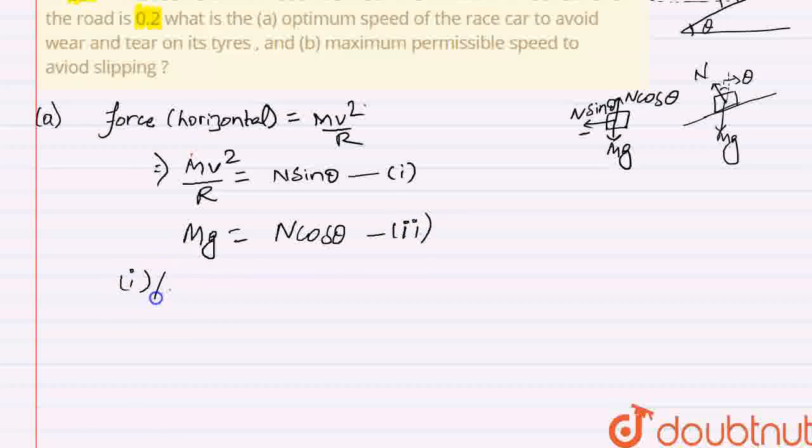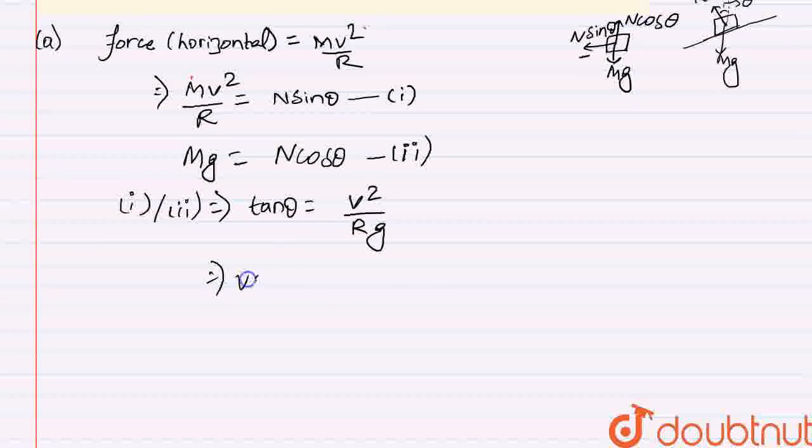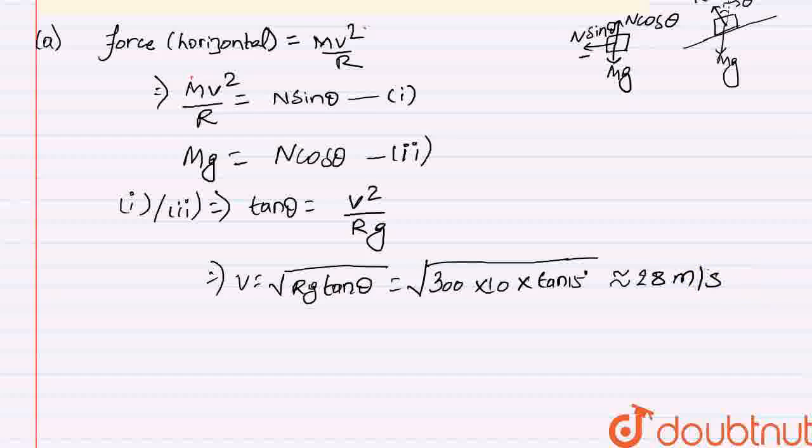Divide first equation by second equation and you will get tan theta equal to V square upon Rg. From here you will get V equal to root Rg tan theta. R is the radius, put all the values, radius is 300 meter, g is 10 meter per second square into tan 15. And this velocity will be almost equal to 28 meter per second. So part A is done now for part B.